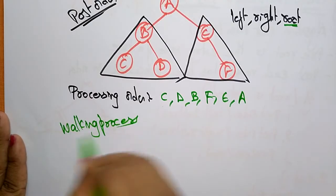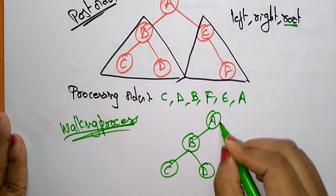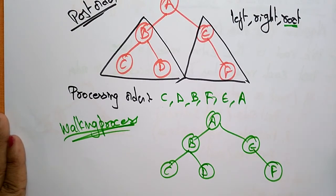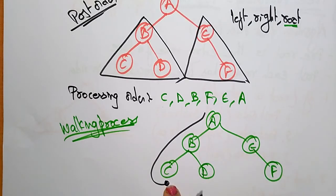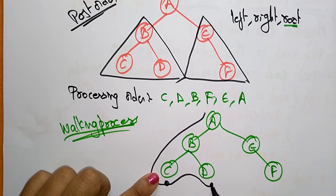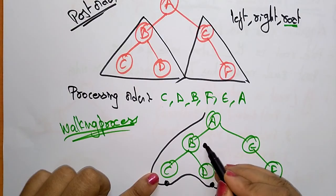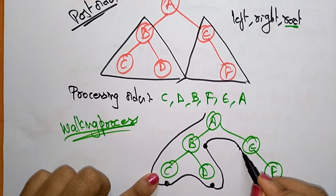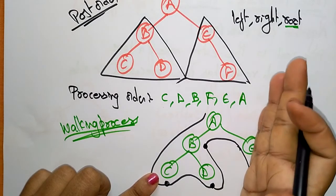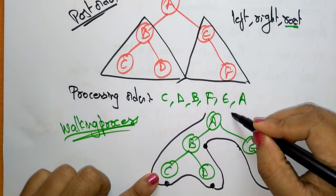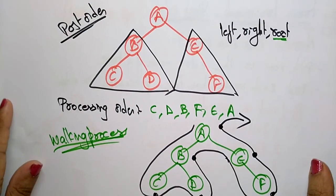Now let me show you the walking process. Tree: A, B, C, D, E, F. First, visit the left subtree — visit left, then right, then root. This left subtree is over. Now come to the right subtree. In the right subtree, first visit the left — there is no left — then visit right, then root. The right subtree is also over. Come to the main root. This is the walking process of post-order. Thank you.